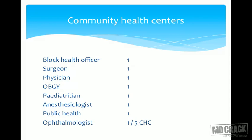Coming to the Community Health Centers (CHC): one CHC serves 80,000 to 1 lakh population. Staffing at the CHC includes: one block health officer (who is not necessarily a medical person, but a senior administrator with program experience), one surgeon, one physician, one obstetrician and gynecologist, one pediatrician, one anesthesiologist, one public health expert, and one ophthalmologist per 5 CHCs — since ophthalmologists are rare, they cater to five CHCs. There is also a dental surgeon.